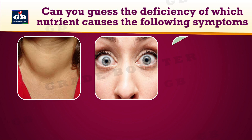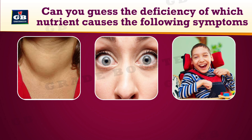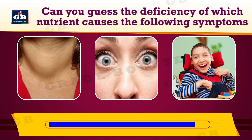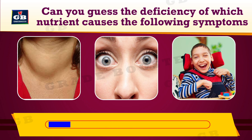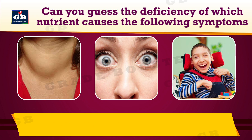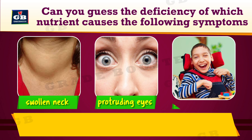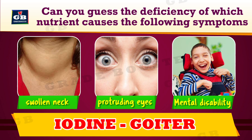Can you guess the deficiency of which nutrient causes the following symptoms? Didn't you get it? Okay, I will give you the clues: swollen neck, protruding eyes, mental disability. It is iodine deficiency. Iodine deficiency causes the condition called goiter.